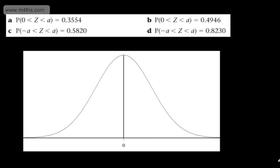In this video, we're going to continue on from the last and look at finding the value of A given a probability. In the first part of the question, the probability that Z, which is our continuous random variable, is between 0 and a value of A, which we need to find, is equal to 0.3554.